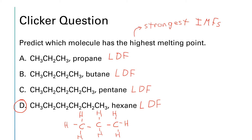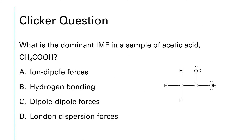This question could also have been phrased as: which has the highest boiling point, which has the highest viscosity? We'd use the same argument — the molecule with the greatest London dispersion forces is the longest molecule, and that would be the correct answer. For acetic acid, there's no ion present so it's not ion-dipole, but there is an oxygen bonded to a hydrogen, which means the dominant force is hydrogen bonding.